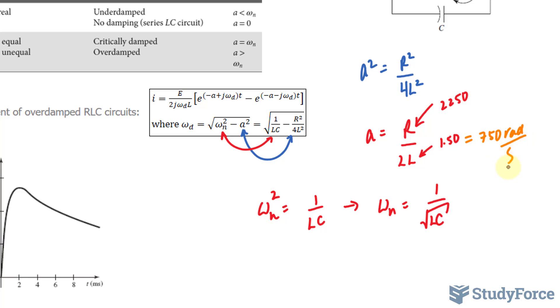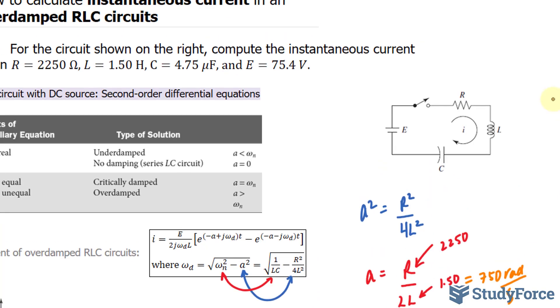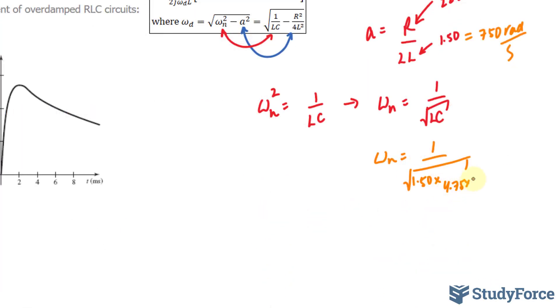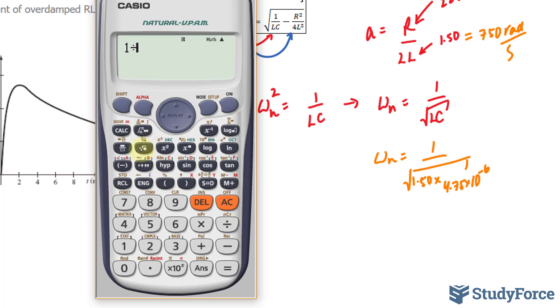750 radians per every second. And, over here, I have omega n is equal to 1 over my inductance, once again, is 1.50. And we're told that our capacitance is 4.75 microfarad. I need to make this into farads. We'll multiply this by 4.75 times 10 to the power of negative 6. That's the same thing as microfarads. Using my calculator, 1 divided by the square root of 1.50 times 4.75 times 10 to the power of negative 6. This gives me 374.6.